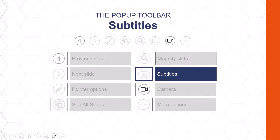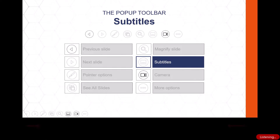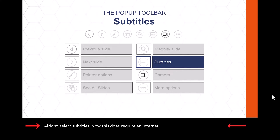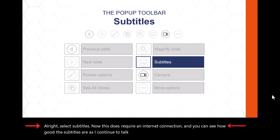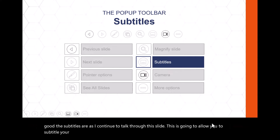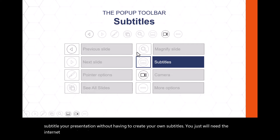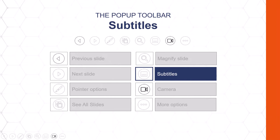Next we have the very cool subtitles feature. If you're giving a presentation and people can't hear you in the back of the room, you can come to the pop-up toolbar and select subtitles. This does require an internet connection, and you can see how good the subtitles are as I continue to talk through this slide. This allows you to subtitle your presentation without having to create your own subtitles. When you're done, come back to the pop-up toolbar, click subtitles to turn them off, and you're done.